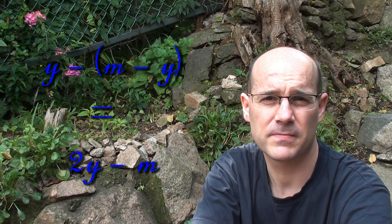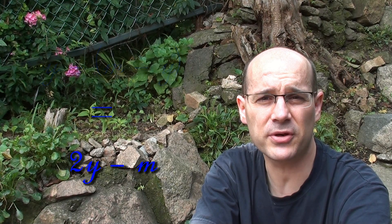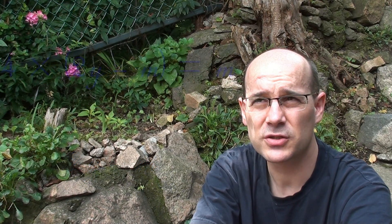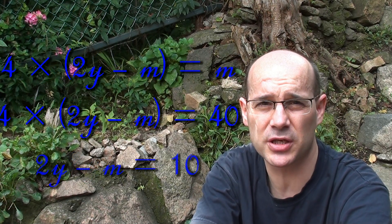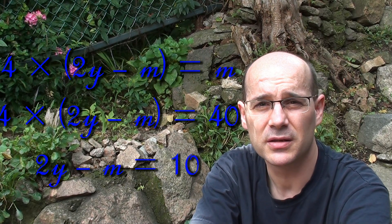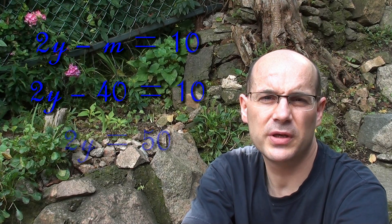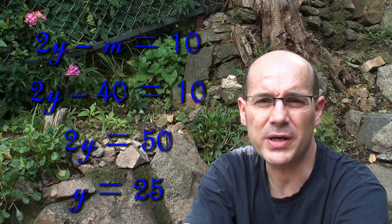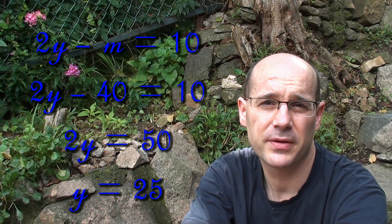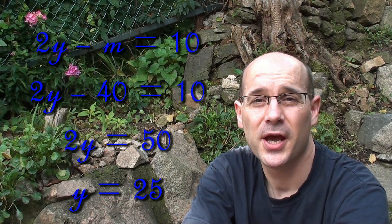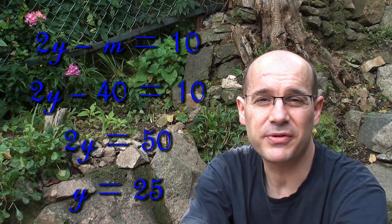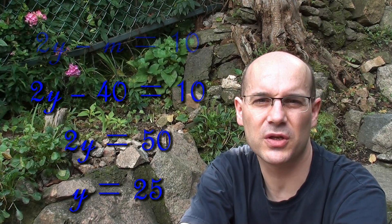I am four times that age, and I'm 40. So if 40 is four times that age, that age is 10. You replace M with 40 and find that your age minus the difference equals 10, which means twice your age is 50, and hence your age is 25. That's the solution to the age problem!